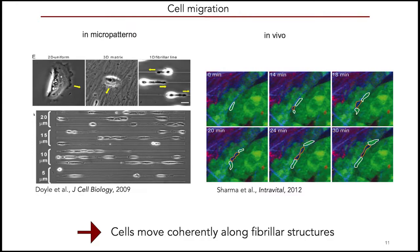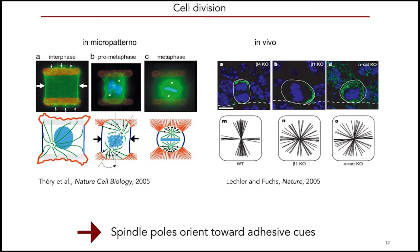Cell migration has been studied for a long time on 2D substrates and later on 3D collagen fiber matrices. Ken Yamada's work shows that micropatterned lines can recapitulate exactly the mechanism by which cells migrate — forming protrusions and dragging the cell body. Micropattern line width can be varied to modulate migration speed. These fibers recapitulate actual collagen fibers seen in vivo, including the phenomenon of cells moving one after another in a queue along the fibers.